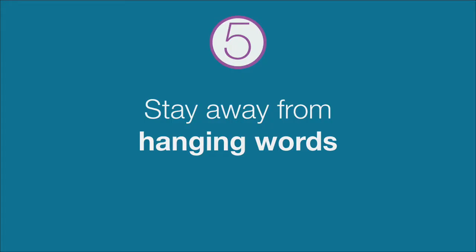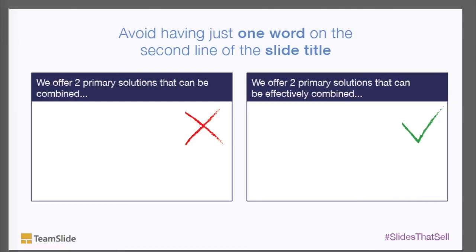Tip number five: stay away from hanging words. Avoid having just one word on the second line of the title — it creates a visual interruption and draws unintended attention to the single word. To fix this, you can add a manual break to force two or more words onto the second line, or add more words to the title. You may also consider giving your team examples of how to format slide titles that go on one or two lines correctly. You can see in this example the added word makes it more visually appealing and avoids focus on that one hanging word.